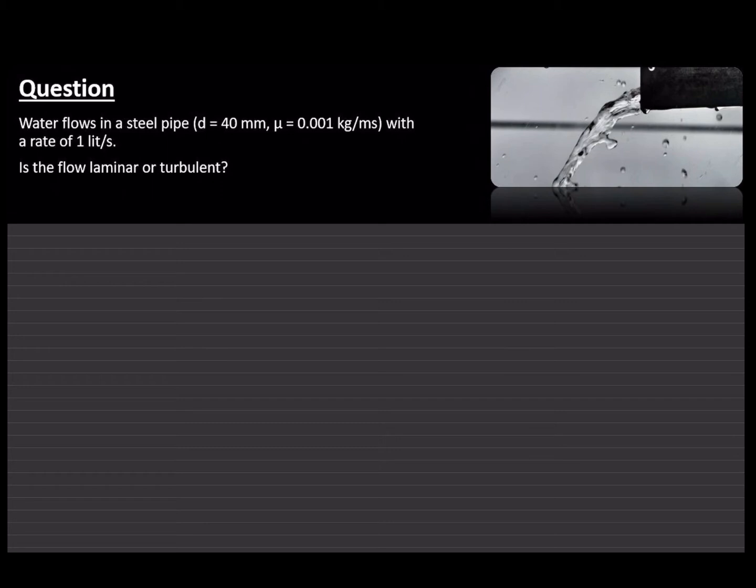That means water is just going in all different directions, just like you see in here. Whereas if the Reynolds number is less than 2000, that means that the flow is more laminar. That means it's flowing like a straight line coming out of the pipe.